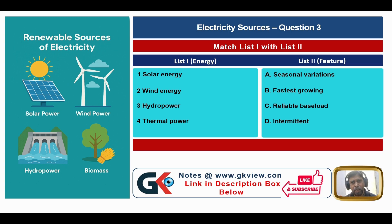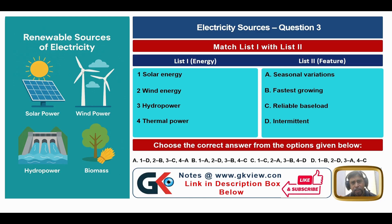Solar energy matches with B — fastest growing energy in the world. Wind energy is intermittent because it is only generated to full capacity when wind speed is sufficient; otherwise it slows down. So intermittent is the matching for wind energy.